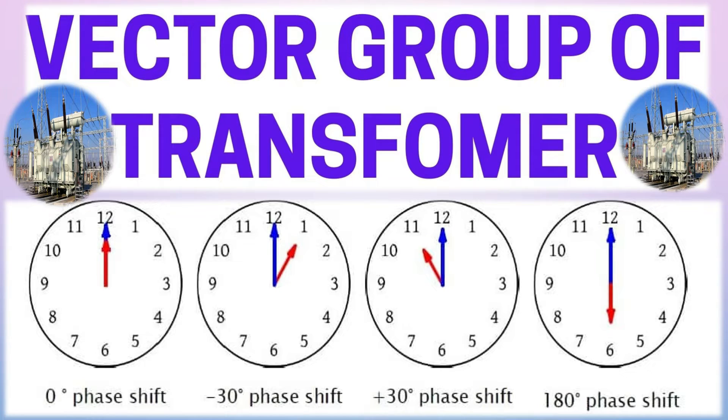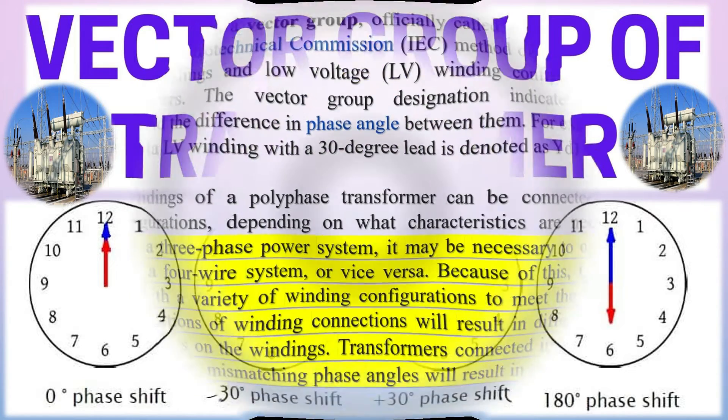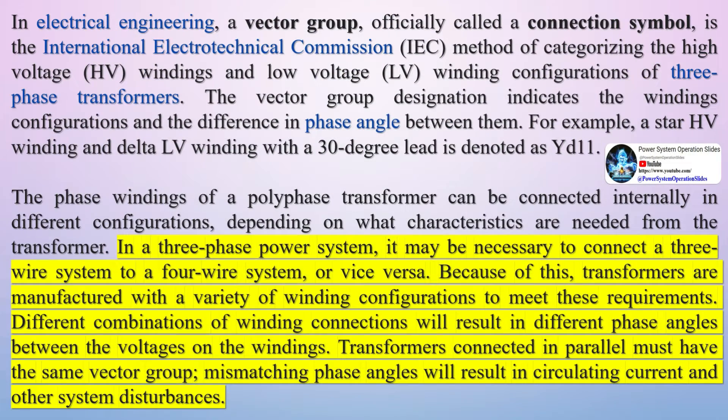The vector group of a transformer is a method of categorizing the high-voltage HV windings and low-voltage LV winding configurations of three-phase transformers. It is indicated on the nameplate of the transformer by the manufacturer.